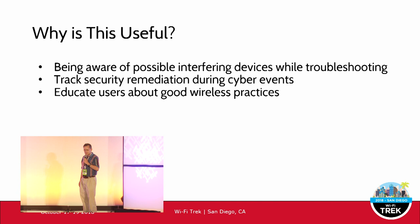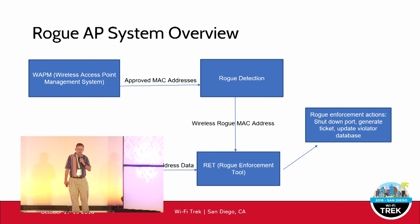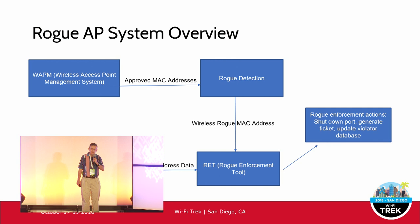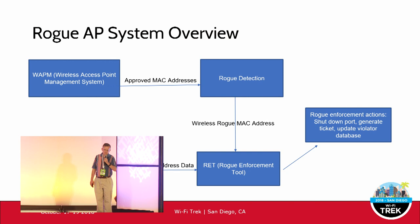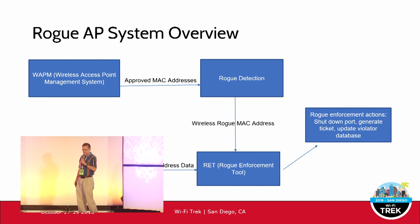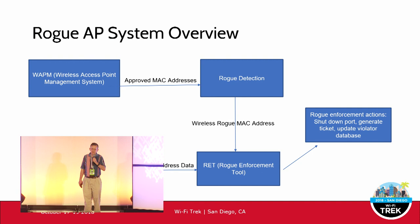Here's a general overview of how this works. We have our wireless access point management system, and once a device is fully approved, a whitelist entry is uploaded into the rogue detection system. If something is detected over wireless that is not on the whitelist, it's flagged as a rogue, and the rogue MAC address is sent to the rogue enforcement tool. Simultaneously, distribution routers gather the wired MAC address. Enforcement actions then happen: ports can be shut down, tickets can be generated, and a violator database is updated.